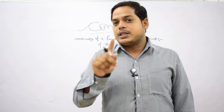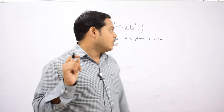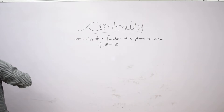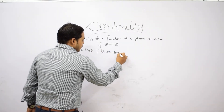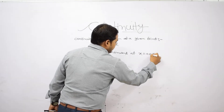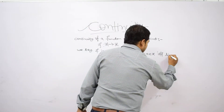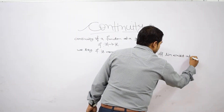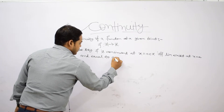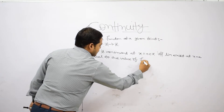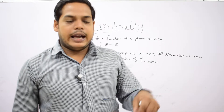We say a function is continuous at x equal to a if the limit at that point must exist and the value of the function at that point is equal to the limit. That is, f is continuous at x = a if and only if the limit exists at x = a and equals the value of the function. LHL and RHL must both exist, be equal to each other, and equal to the value of the function.